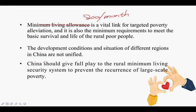China should give full play to the rural minimum living security system to prevent the recurrence of large-scale rural poverty. The recurrence of poverty means that in some places where poverty had been eliminated after decades of effort, poverty has returned, potentially wasting the hard work previously done.